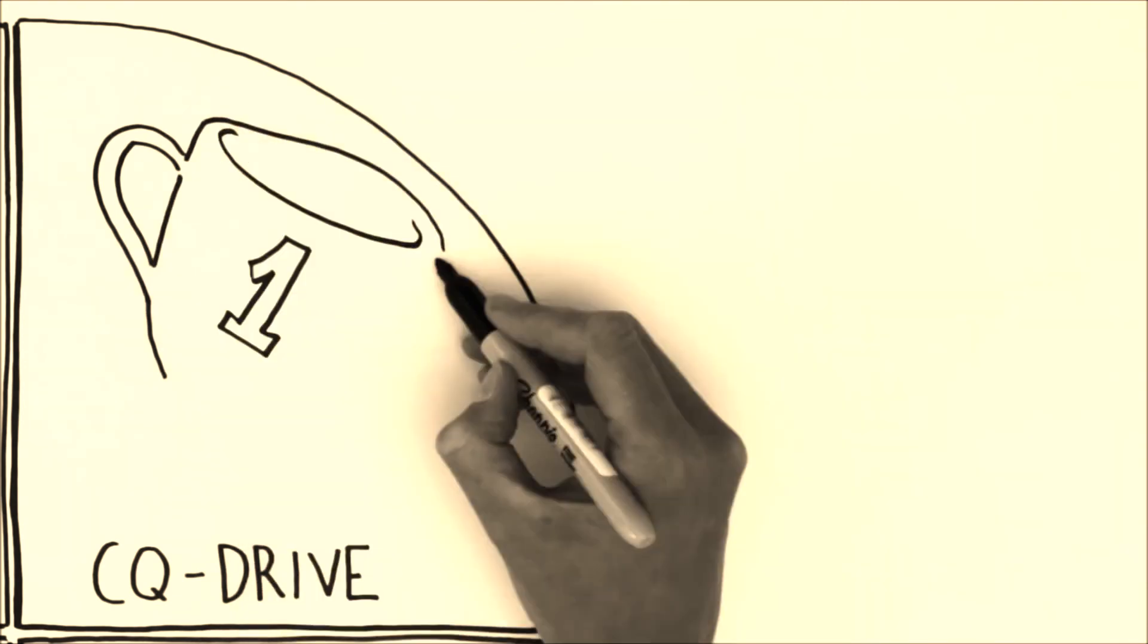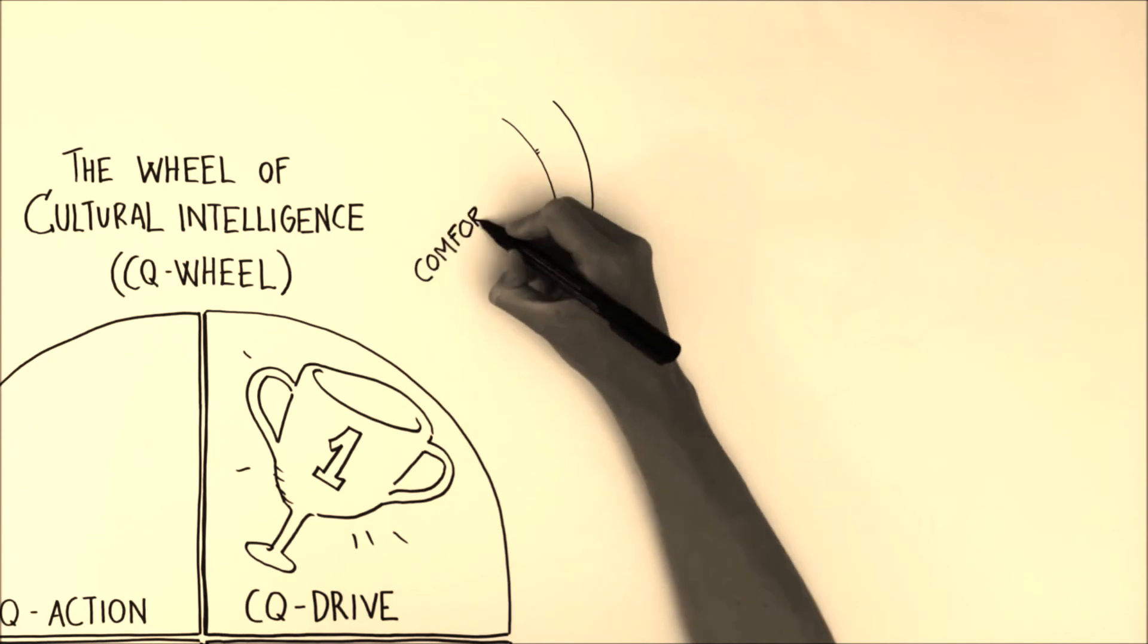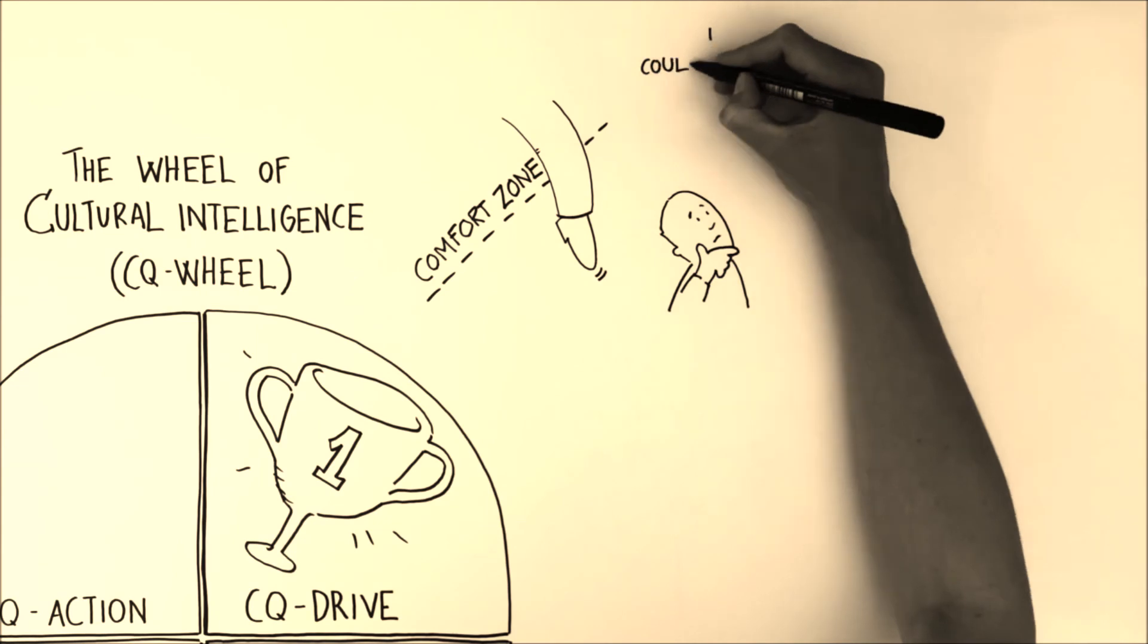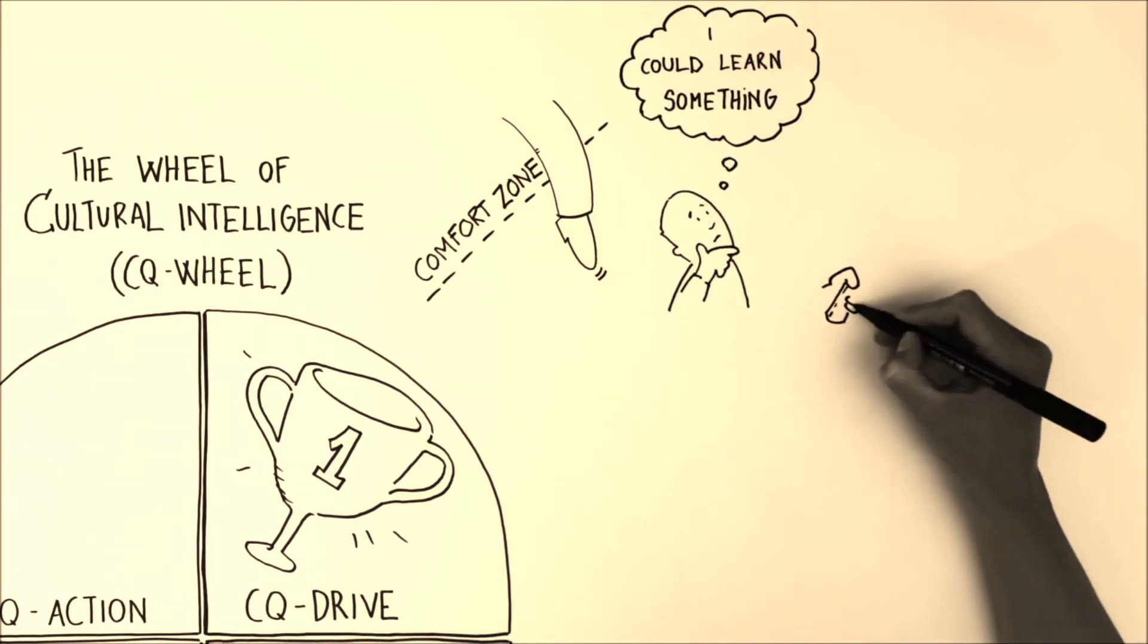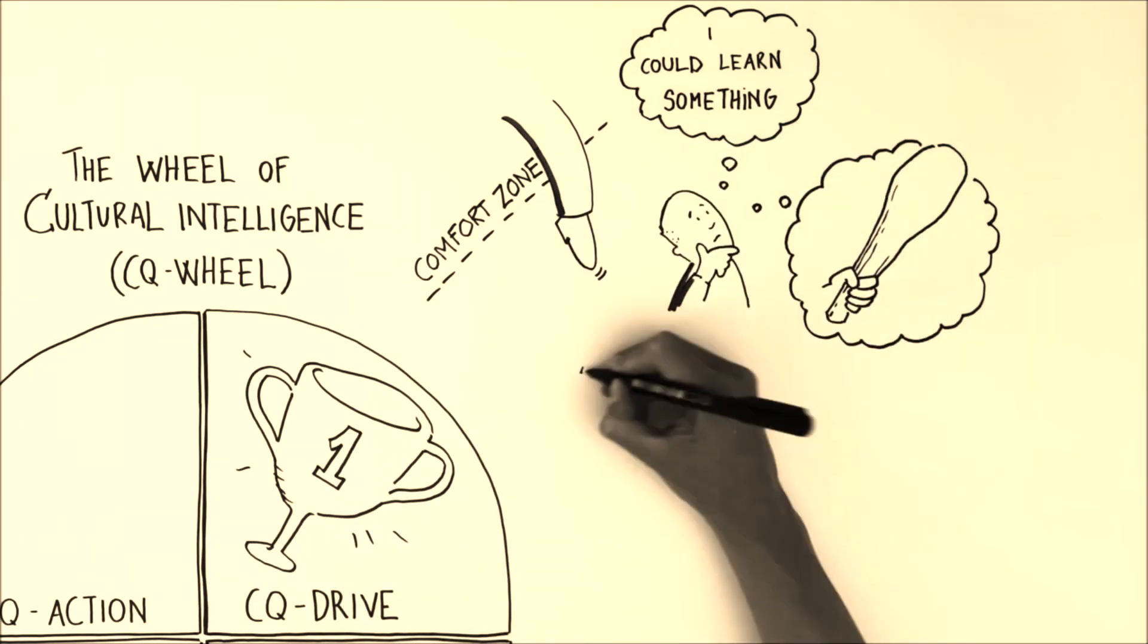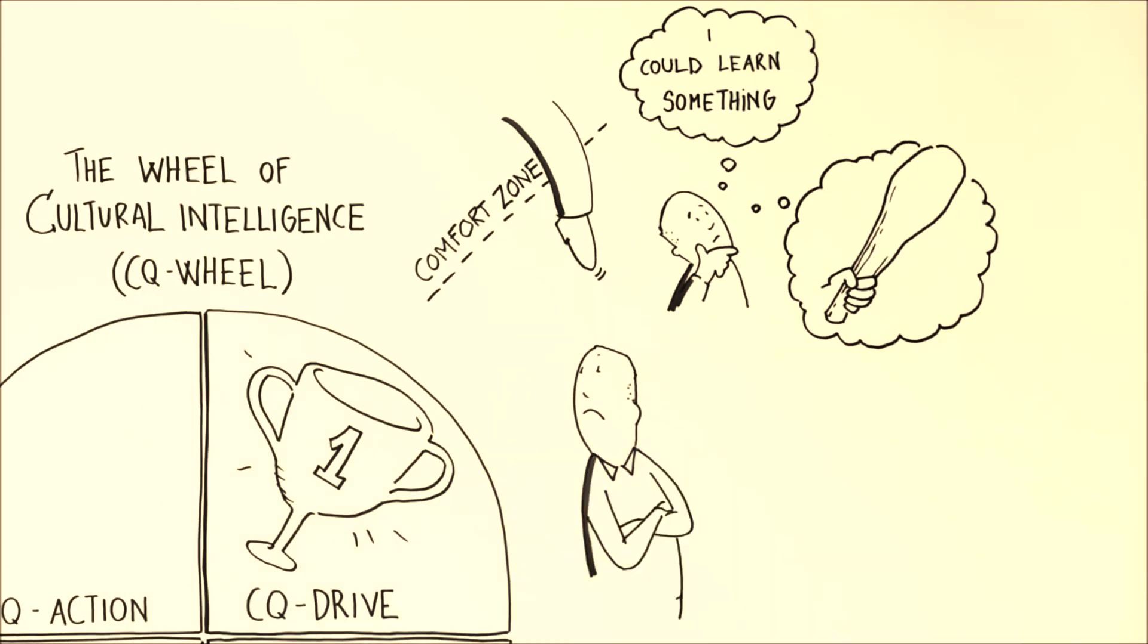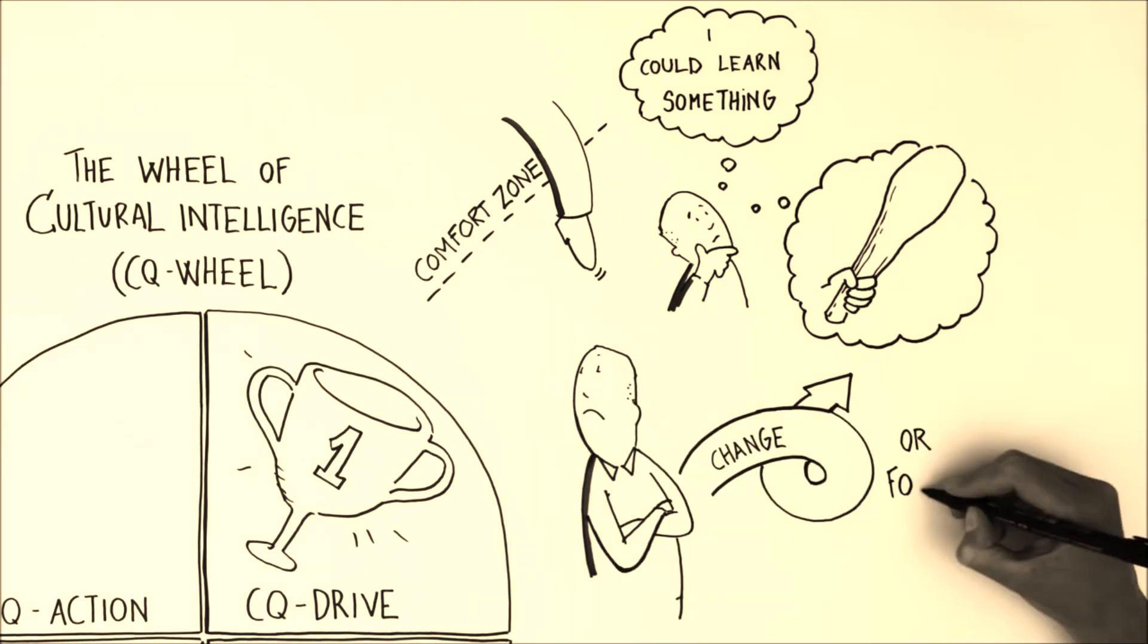The first part of the Wheel is CQ Drive. This is your motivation and confidence to work outside your culture. If you think you can't learn anything from being in another culture, your stone age brain tells you that it's much more valuable to be around people like yourself. If you don't think it can be fun, educational, or beneficial to be around other cultures, you're probably never going to get positive results. So either change that attitude or forget about working cross-culturally altogether.